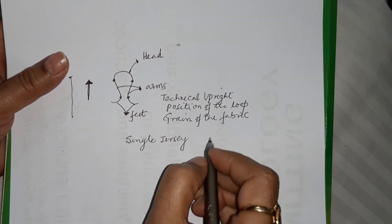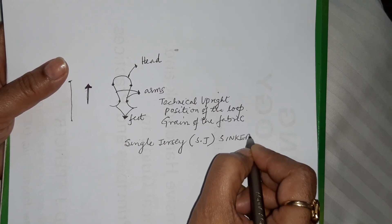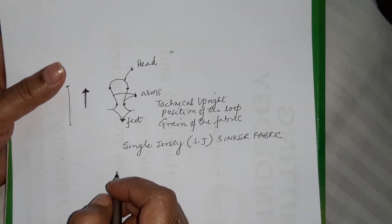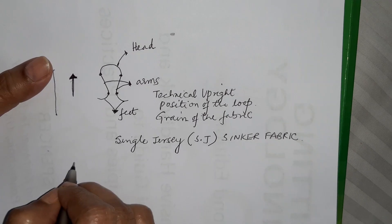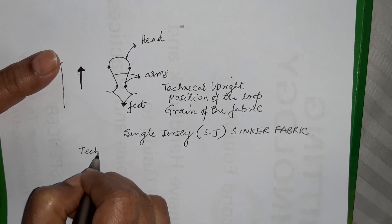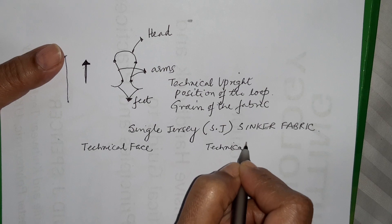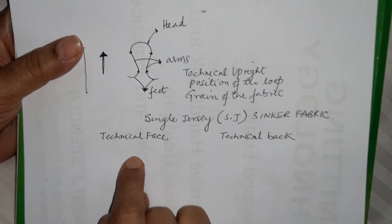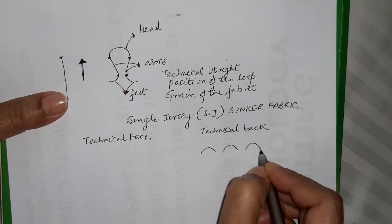Let's see what a single jersey fabric is and draw one single jersey structure. It is abbreviated as SJ and in the industry it is sometimes referred to as a sinker fabric. This is one of the very basic fabrics — about 70% of the t-shirts in your wardrobe will be single jersey. A single jersey fabric has a technical face and a technical back, and these two sides are different from each other. Let's draw the back first because it's easier.